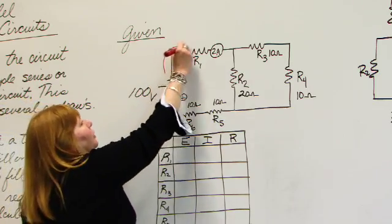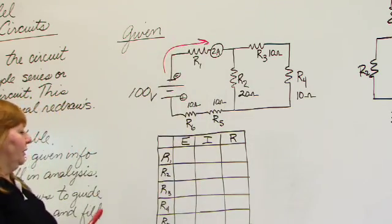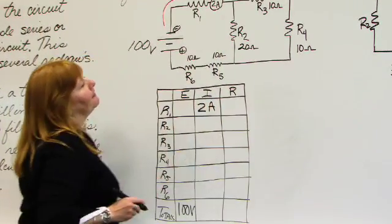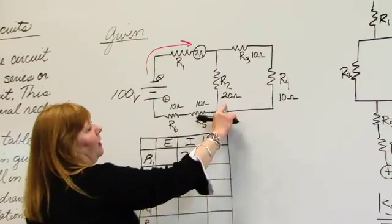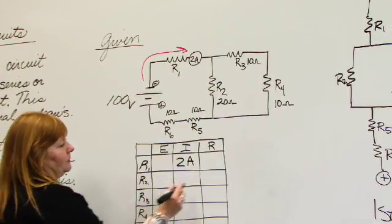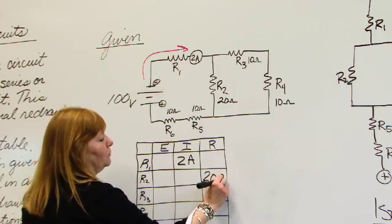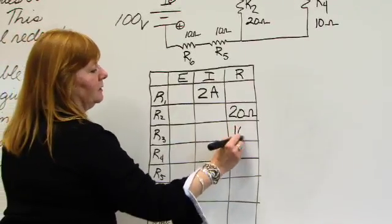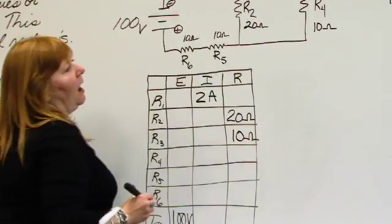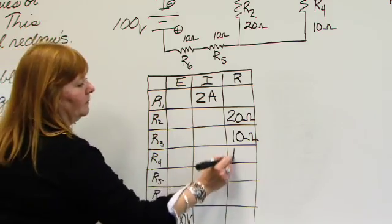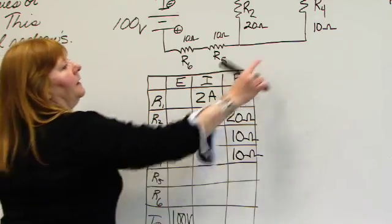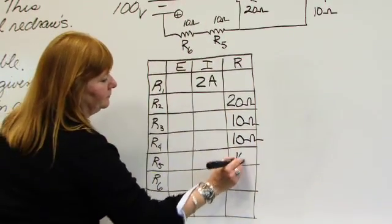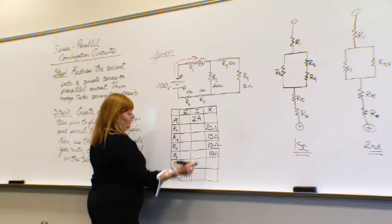Coming over here, we know that R2 has 20 ohms, so R2 has 20 ohms, put it under resistance. R3 has 10 ohms. R4 has 10 ohms. Now coming back this way, R5 has 10 ohms. And R6 has 10 ohms.